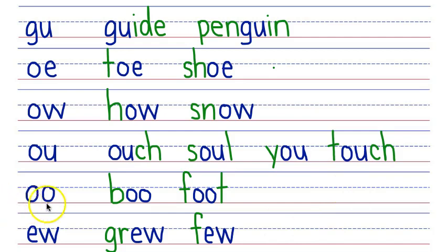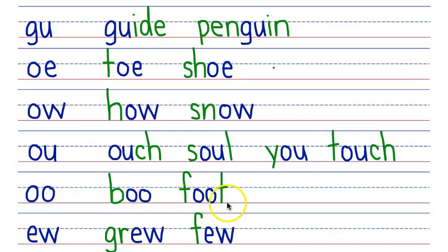You will learn about the OO phonogram that makes two sounds: OO and UH. OO says OO as in 'boo,' and OO says OO as in 'foot.' You will learn about the EW phonogram that makes two sounds: OO and U. EW says OO as in 'grew,' and EW says U as in 'few.'